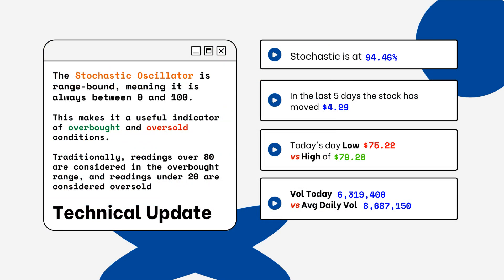You can see on the right side where the stochastic level is on this particular stock. This is a technical update — you want to look for overbought and oversold conditions. Readings over 80% are considered overbought, and readings below 20% are considered oversold. You want to be aware of this when looking at a particular stock.